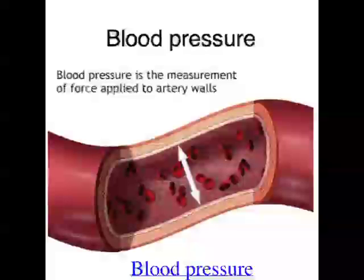Blood is pushed around the body by the heart and as a result it's under pressure. Blood can either be under high pressure — that's called systolic pressure — and it's under high pressure when the ventricles of the heart contract and push the blood out. The other blood pressure is diastolic pressure, and that's when the ventricles of the heart relax.